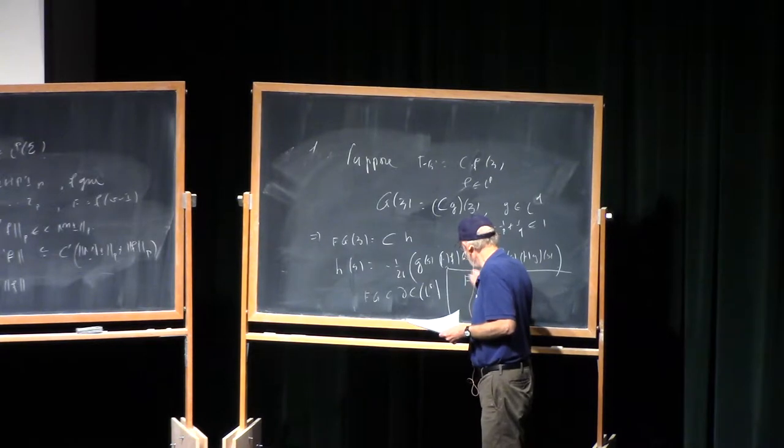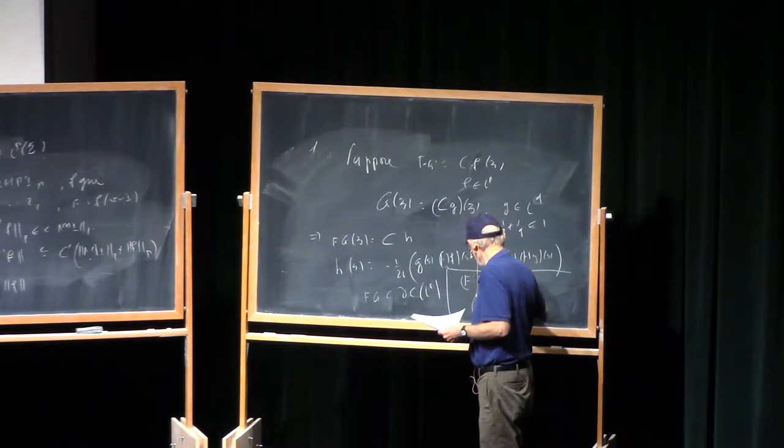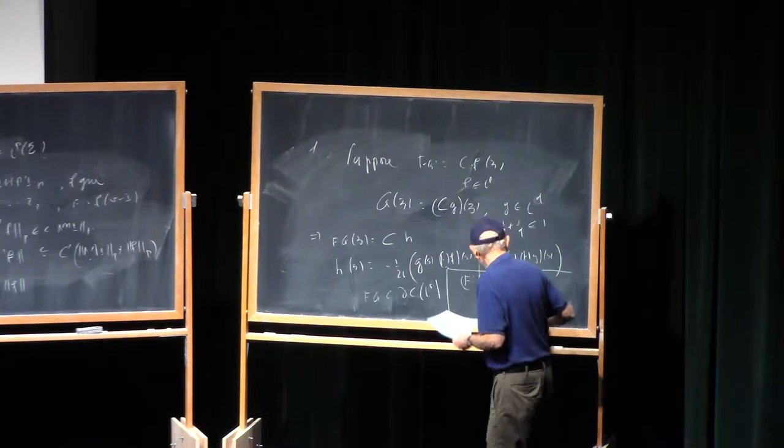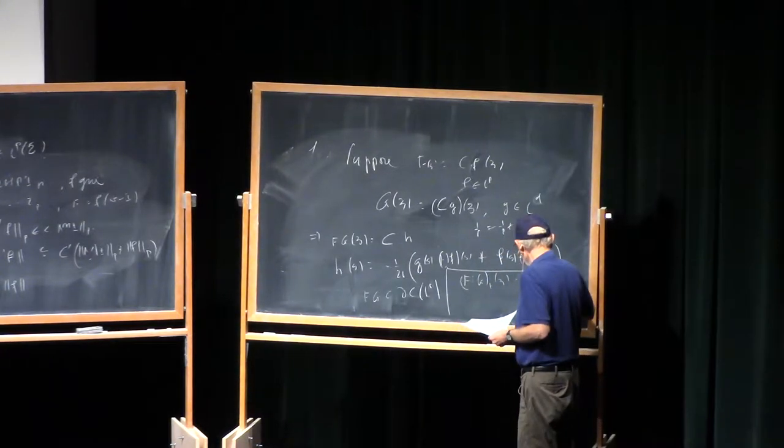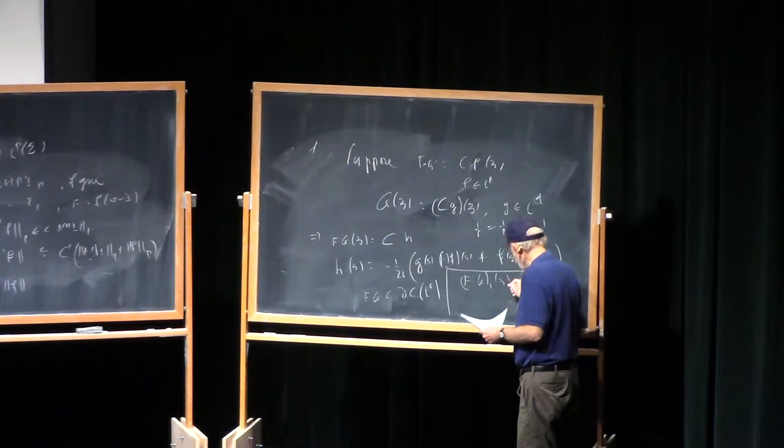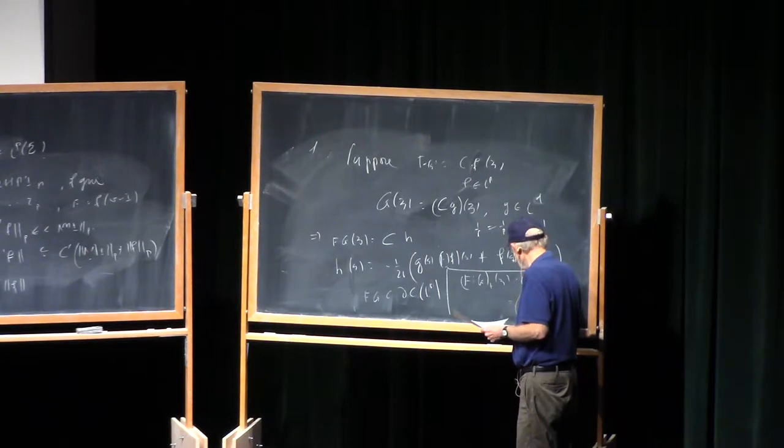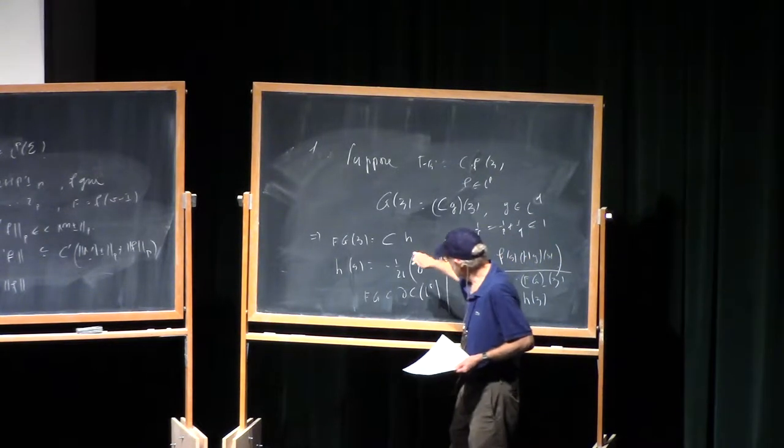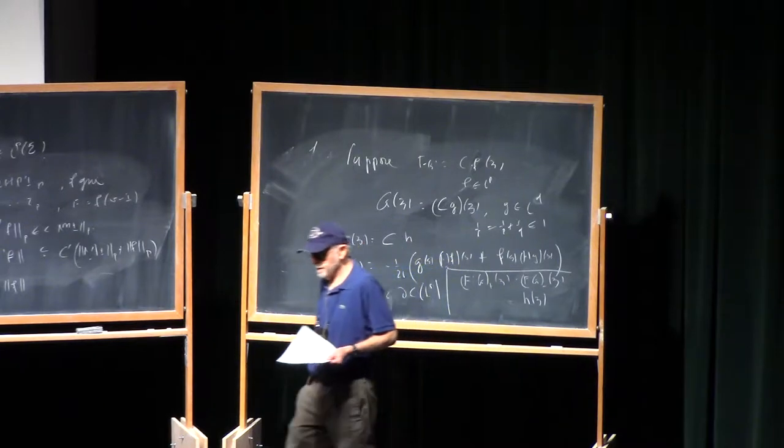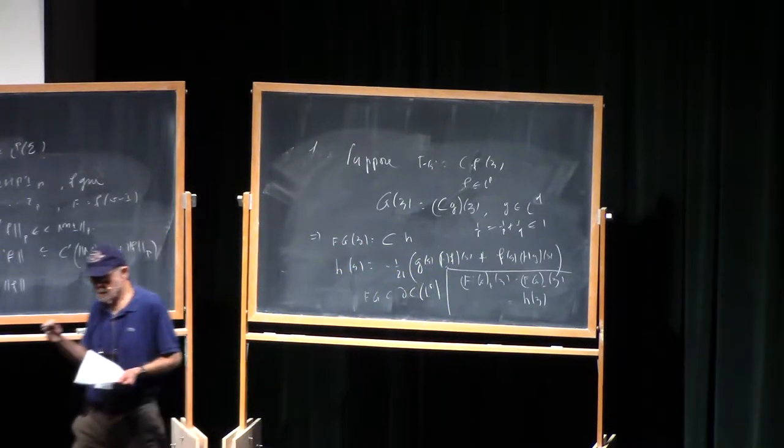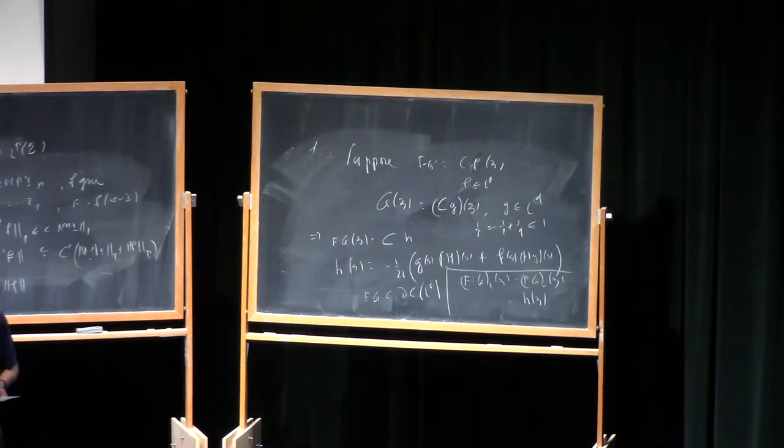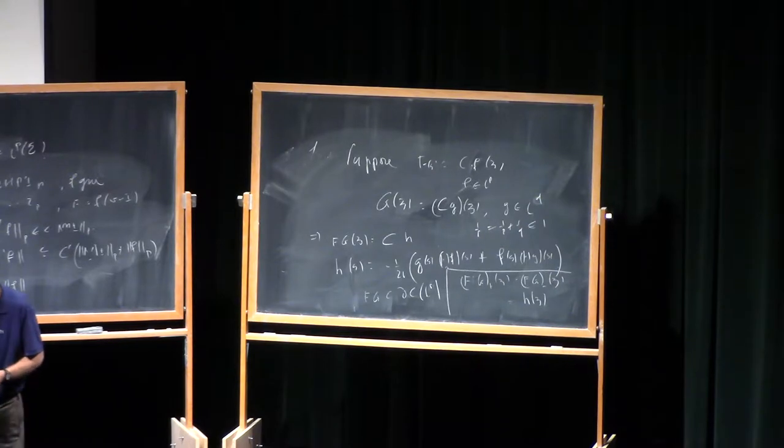If we take fg plus at point z minus fg at point minus, that's just going to be this function h of z, because C plus minus C minus. Now you remember, C plus and C minus are bounded only if p is bigger than 1. But nevertheless, C plus and C minus are defined even if the function h is just in L1. We just don't know it's a bounded operator. But you still have that fact.